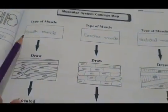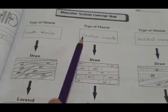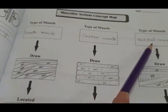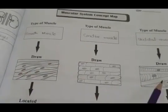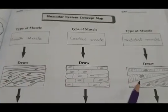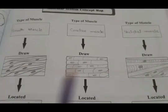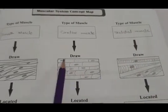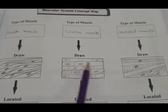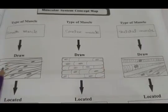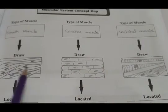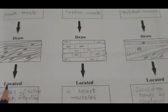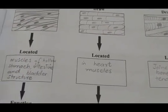In your workbook, first write smooth muscle, then cardiac muscle, and then skeletal muscle. Draw their diagrams. Skeletal muscles and cardiac muscles are not interlinked, but smooth muscles are interlinked. After that, you have to write their location — where are they located.